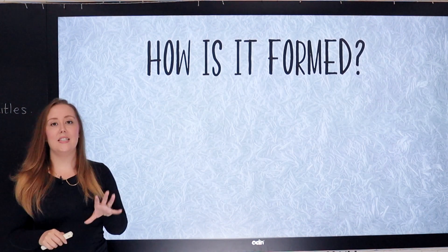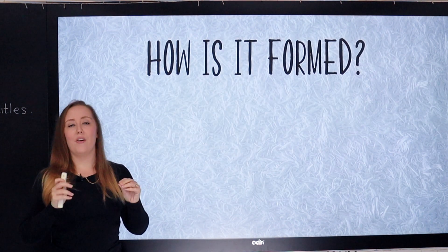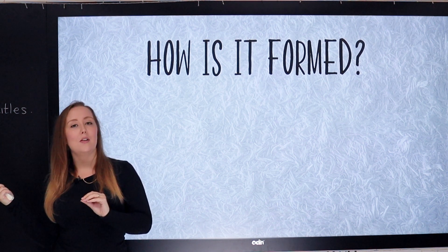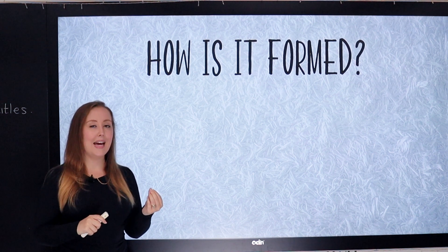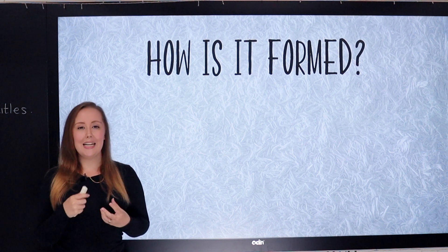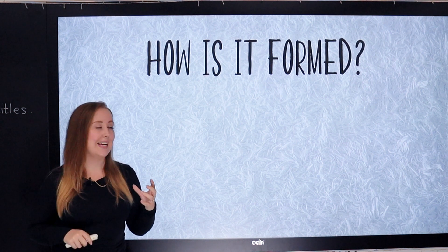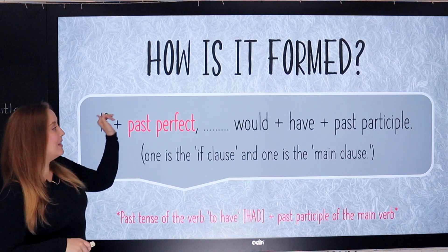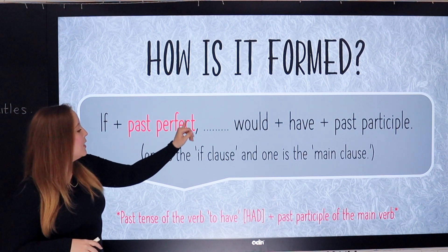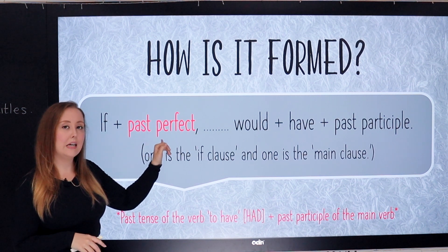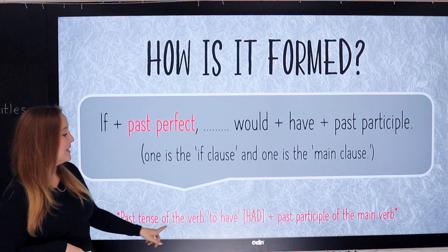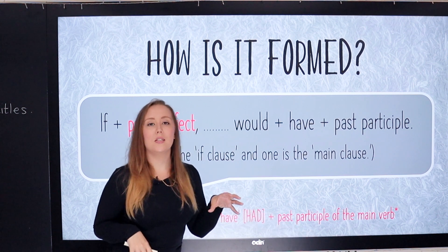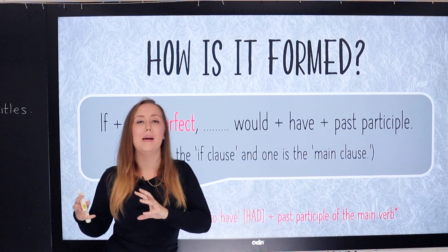So how is it formed? This one is by far the most complex in terms of structure. You can see from the zero conditional, first conditional, and second conditional videos — they're slightly easier in terms of writing and saying it. The third conditional uses the if clause still, but here we use the past perfect. The past perfect is formed using the word 'had' and the past participle of the main verb.